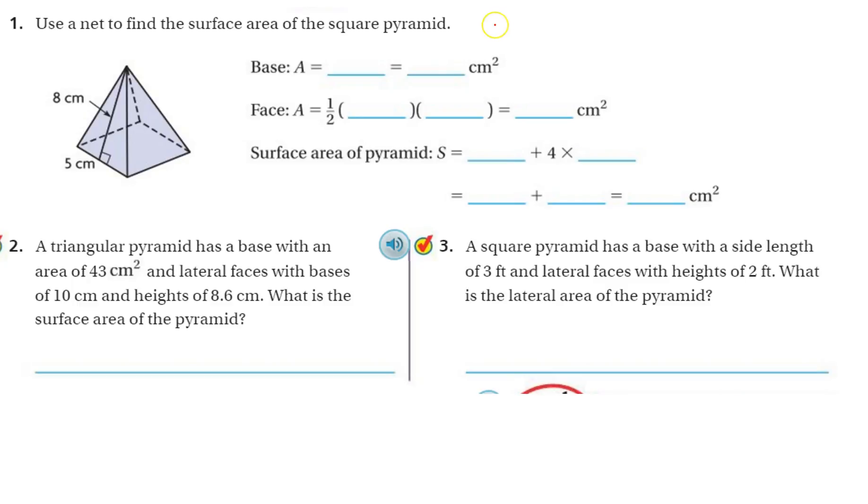Alright, now I'm on the top of page 449. Let's go over some more examples. Alright, use a net to find the surface area of the square pyramid. So again, they said surface area, so we're finding it all.